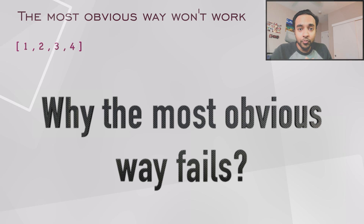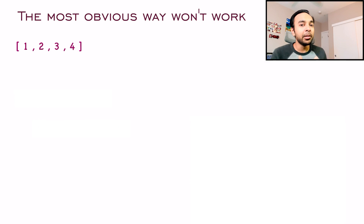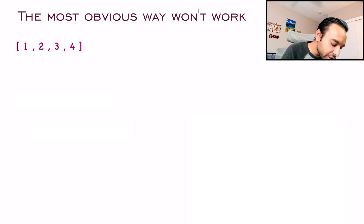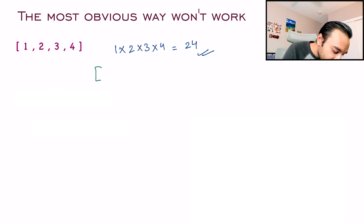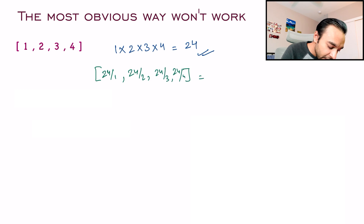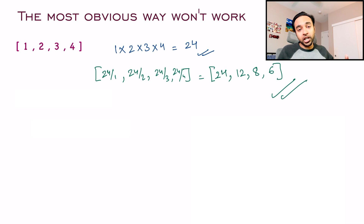When you start to solve the problem it seems so simple — so why is it under medium difficulty? The most obvious approach is: take the product of every element in the array, then for each position in the result, divide that total product by the element at that position. For the array 1, 2, 3, 4 the total product is 24, giving 24/1, 24/2, 24/3, and 24/4, which gives the correct answer. But when you try to write code for it, you will see that your code fails and you get a wrong answer.